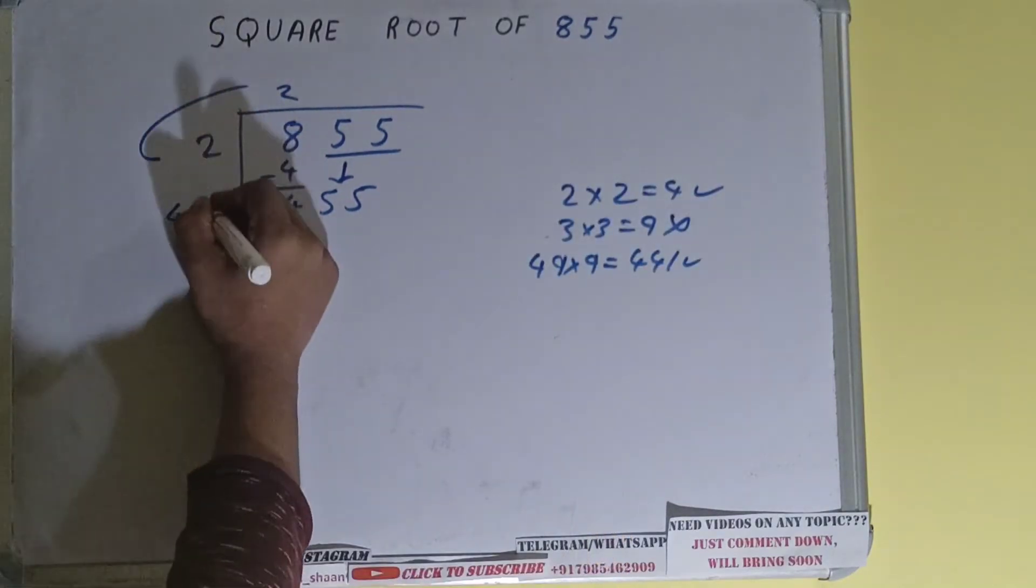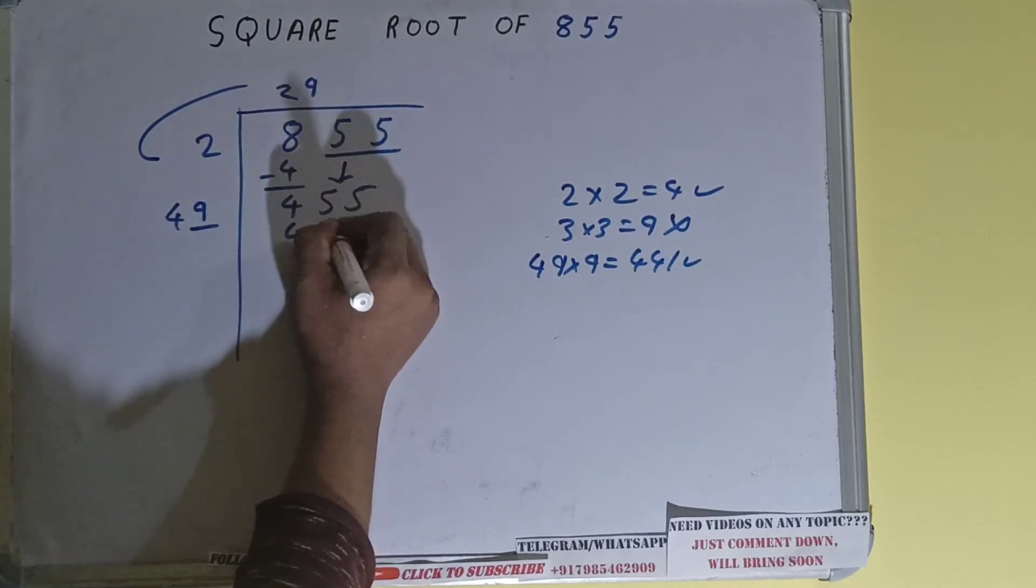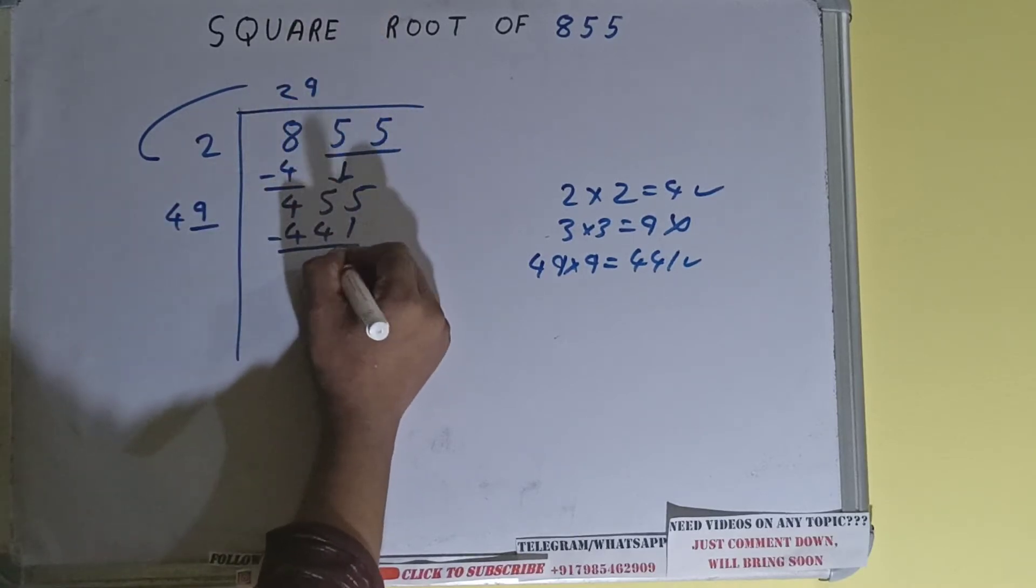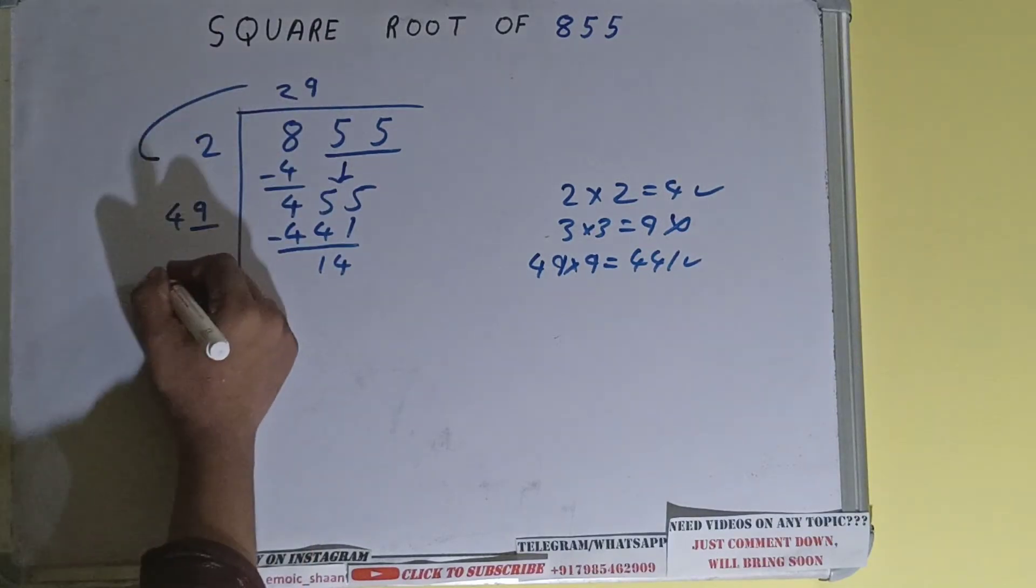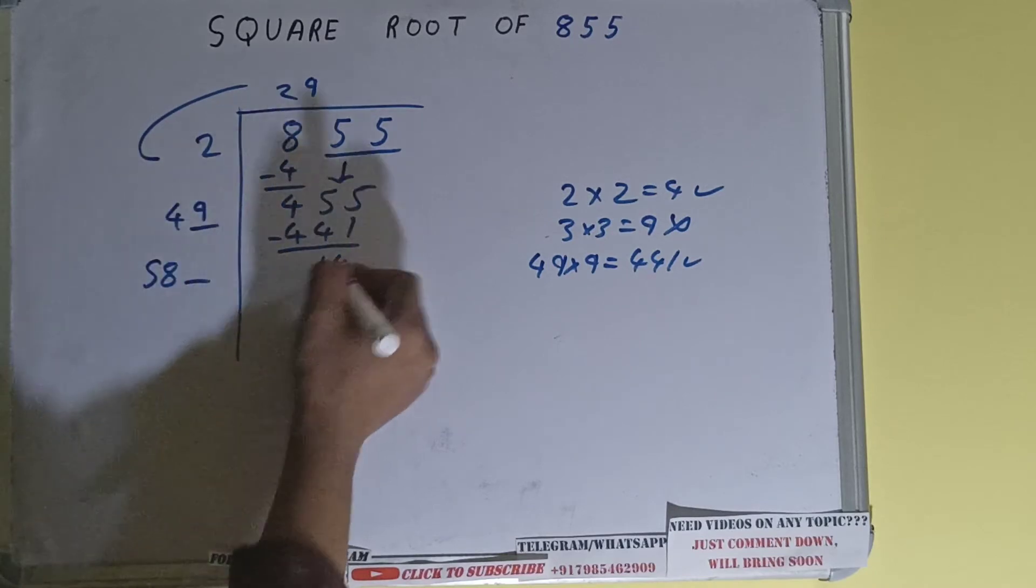So 9 here and 9 here, it will be 441. Subtract it and 14 will be left. Now 49 into 9, so add both. 49 plus 9 will be 58 and one digit extra.